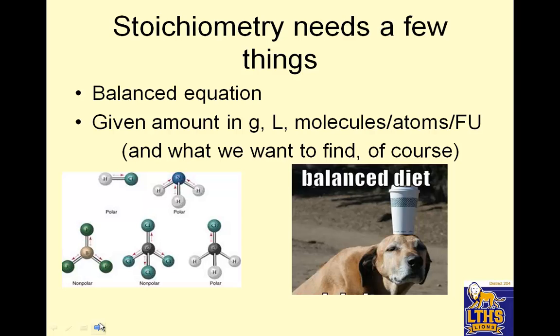In order to do stoichiometry, we need a few things: a balanced equation, a given amount in grams, liters, or molecules, atoms, or formula units, and what we want to find. So what do we need? A balanced equation, a starting amount, and an ending amount.